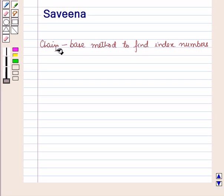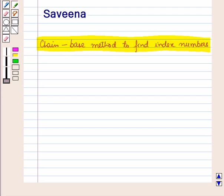Hello and welcome to the session. In this session we will discuss the chain-based method to find index numbers. When year-to-year comparison is required, index numbers are determined by a method known as the chain-based method.